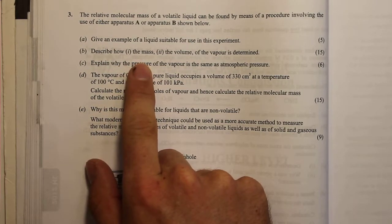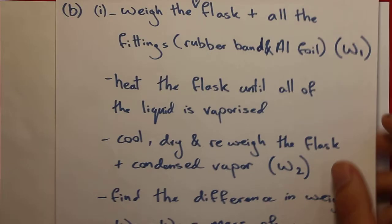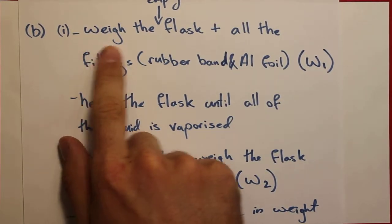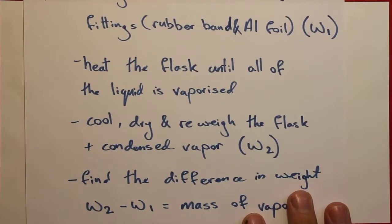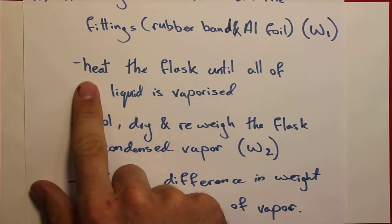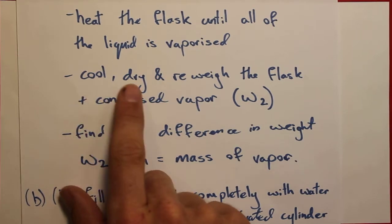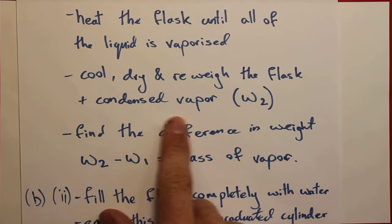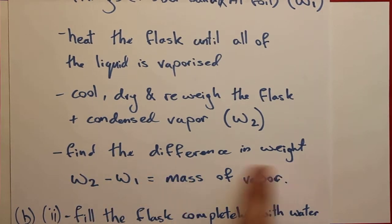In part B, we first describe how the mass of the vapor is determined. First, we weigh the empty flask with all the fittings — the rubber band and the aluminium foil — and call this weight one. Next, we add our volatile liquid and heat the flask until all of the liquid is vaporized. Then we cool, dry, and reweigh the flask with the condensed vapor inside and call this weight two. The difference — weight two minus weight one — equals the mass of the vapor.